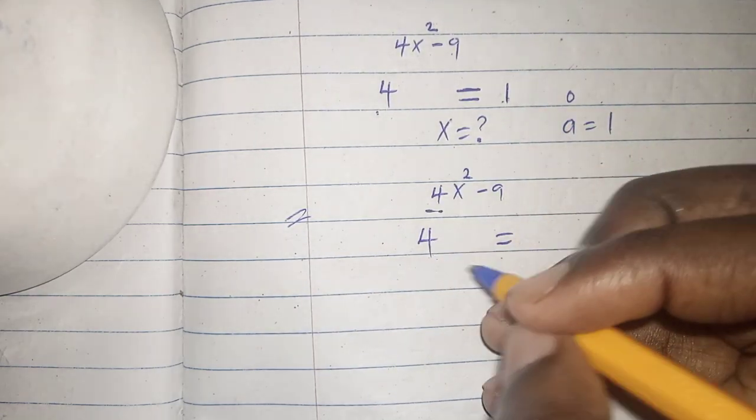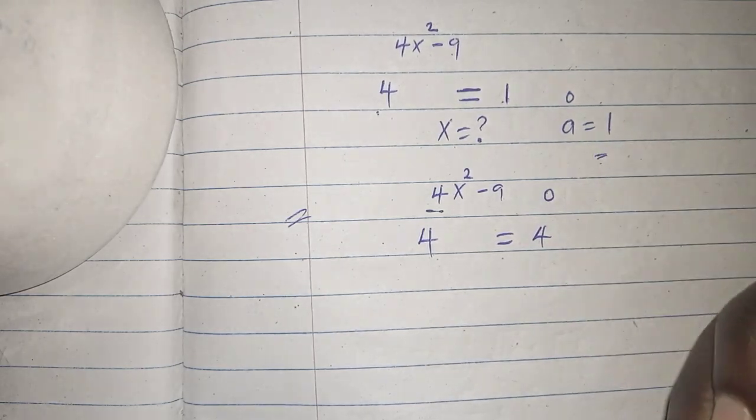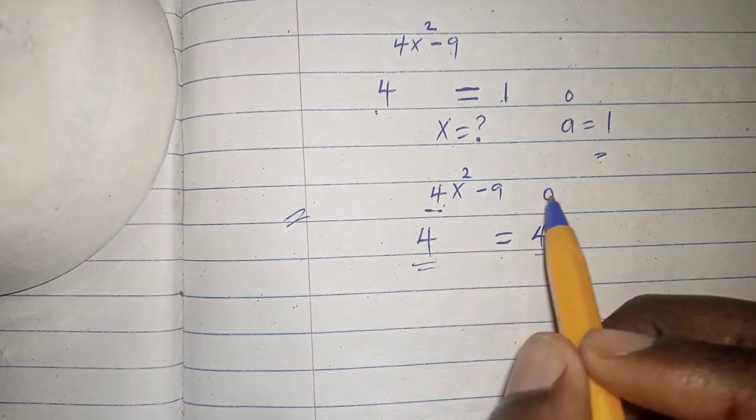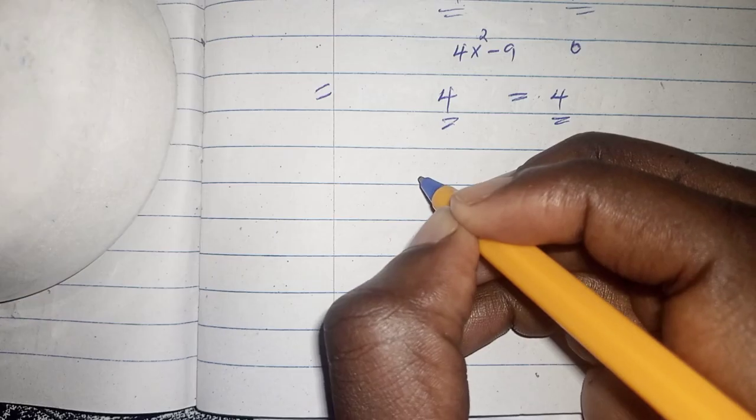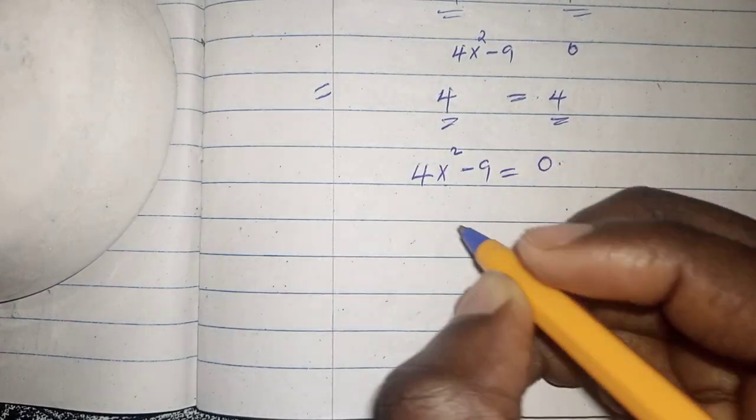1, so we can write it as 4 to the power of 0, which is 1. Okay, so our bases are the same, we can equate our exponents. So 4x squared minus 9 equals 0.